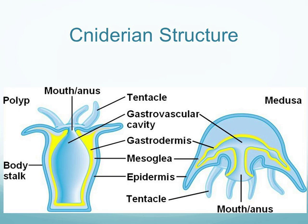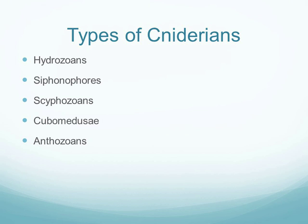Unlike sponges, which have no nervous system, cnidarians have a simple nervous system called a nervous net — no brain, but it allows them to sense their environment. If you touch a jellyfish, it knows it has been touched, but doesn't know whether it hurt or was good or bad.